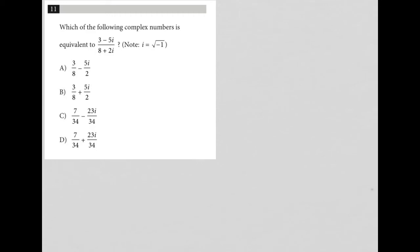So this question says, which of the following complex numbers is equivalent to 3 minus 5i over 8 plus 2i? So this is a simplified question. We know that because it's only a little over one line long. Simplified questions are typically one to three lines long.